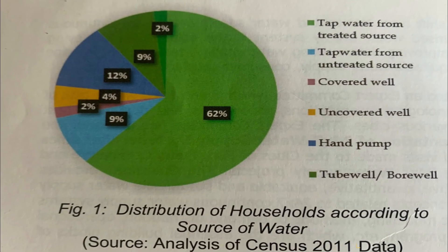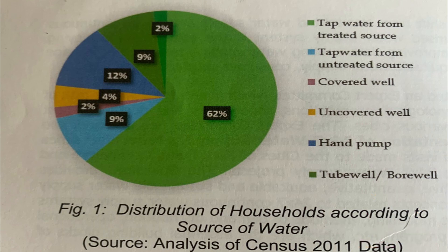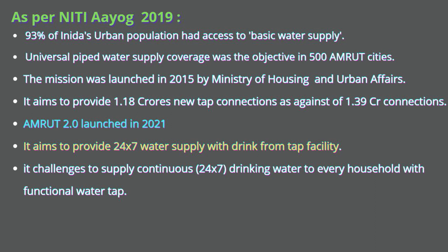Distribution of households according to the primary source of drinking water was reported in Census 2011. As per Nithya Yogi 2019, 93% of India's urban population had access to basic water supply. Universal piped water supply coverage is an objective under the Atal Mission for Rejuvenation and Urban Transformation, AMRUT, in 500 cities of India. The mission was launched in 2015 by the Ministry of Housing and Urban Affairs.